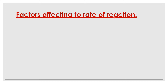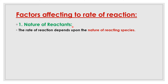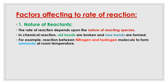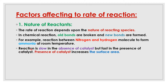We will see them one by one. The first factor that affects the rate of reaction is the nature of the reactant. The rate of reaction depends upon the nature of the reacting species. In any chemical reaction, old bonds are broken and new bonds are formed. For example, consider the reaction between nitrogen and hydrogen molecules — N2 and H2 — to form ammonia. At room temperature, without a catalyst, this is the Haber's process, which is a very slow reaction.